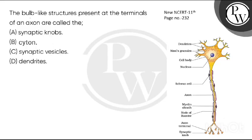Hello, let's read this question. The bulb-like structures present at the terminals of an axon are called what? The options are: synaptic knobs, axon hillock, synaptic vesicles, or dendrites.